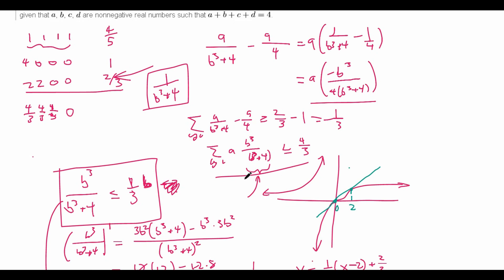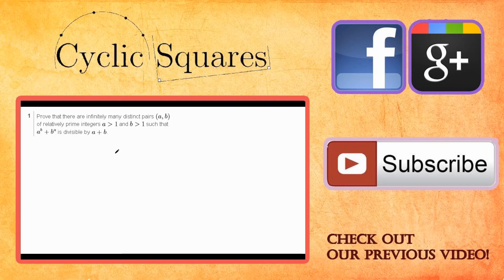So this inequality is finished and we are done. As a note, although I transformed it to the dual to get the bounding idea, you can also solve the problem by bounding 1 over (B cubed plus 4) by a simpler function from below — but I feel that approach is less motivated. I prefer the dual approach. Thanks for watching!